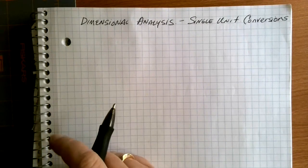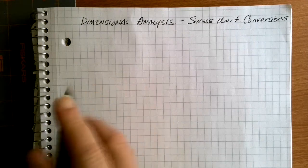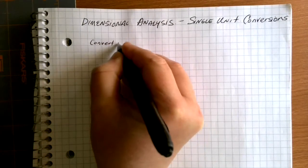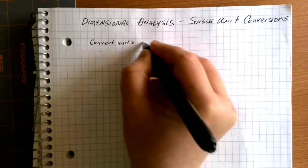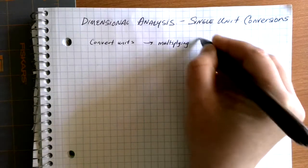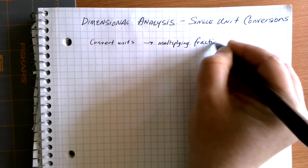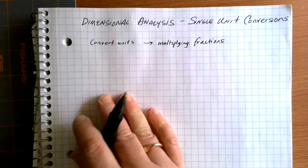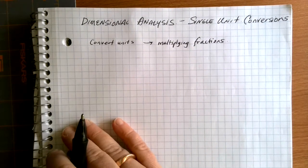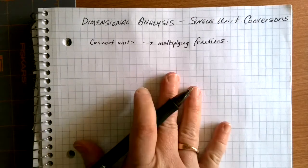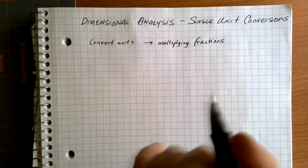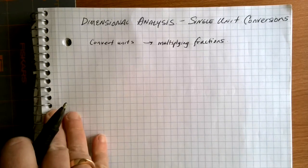Dimensional analysis is a specific process that we use to convert units. I like to introduce this at this point because the process is very similar to multiplying fractions. This particular process is super common in mathematics, but also in a lot of the sciences. Chemistry teachers in particular love dimensional analysis and really wanted the math classes to be able to explain how this process worked.